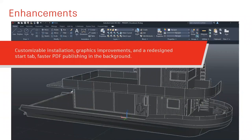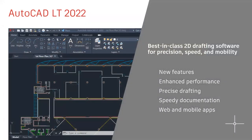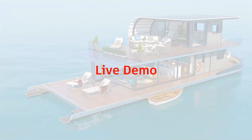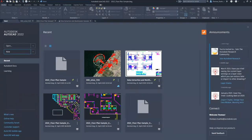Other enhancements include a customizable installation where you can already start the application while the program is still installing. There are also graphic improvements, a redesigned startup that is more organized and cleaned up, and much faster PDF publishing in the background. As a reminder, all these functions are available for AutoCAD LT, and as an LT user you also have access to the web and mobile app. Now I'll stop the presentation and move to the live demonstration.